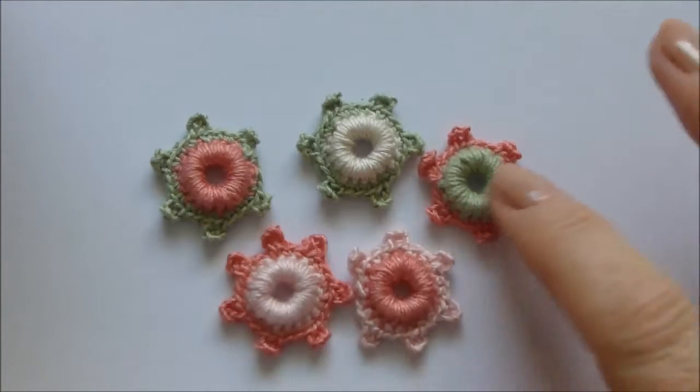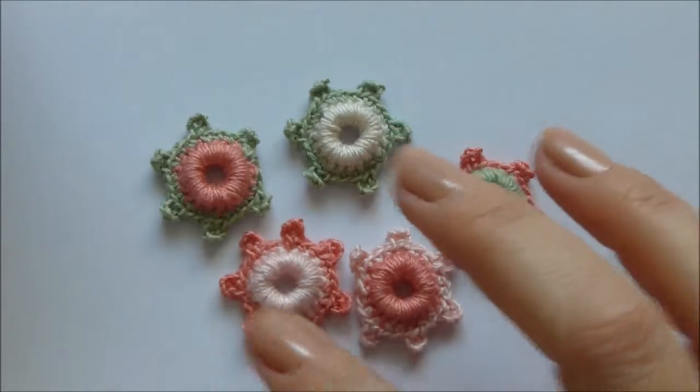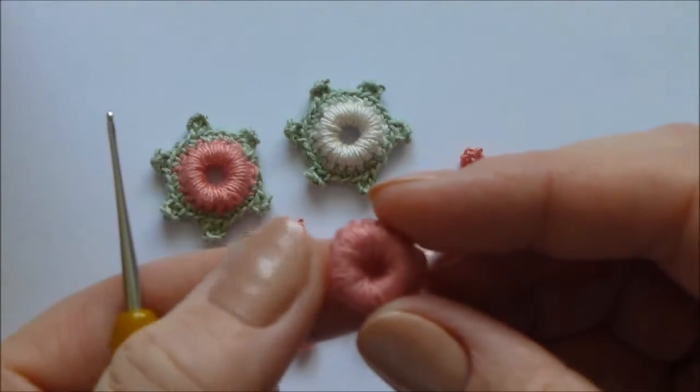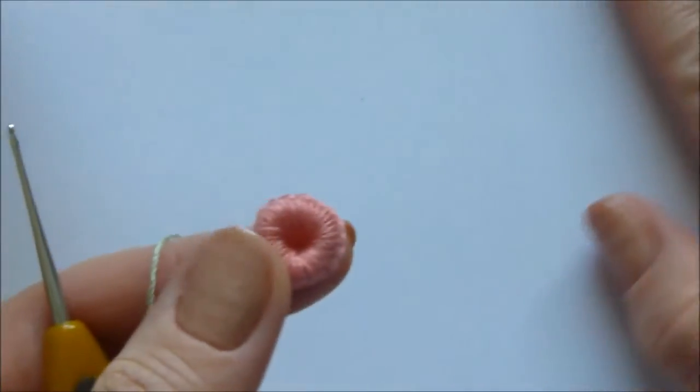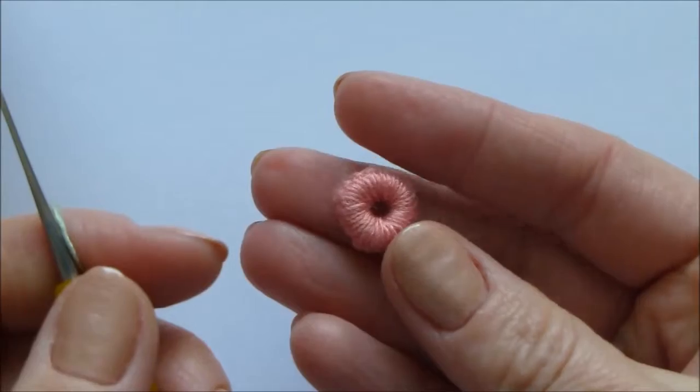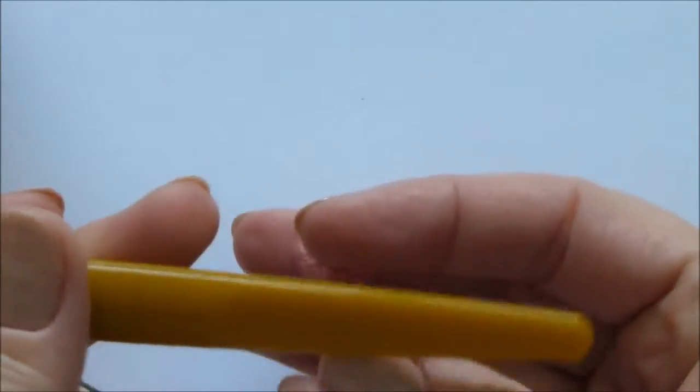To make buttons with picots, take a pre-made button in the shape of a donut and crochet picots around it. I'll show you how to make it.